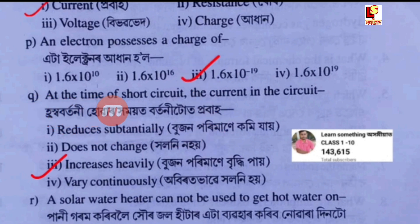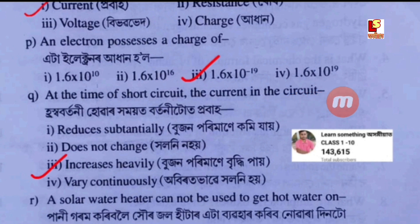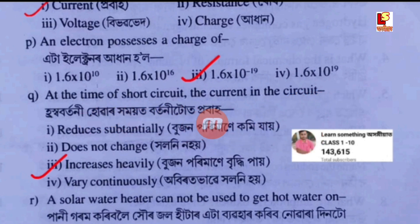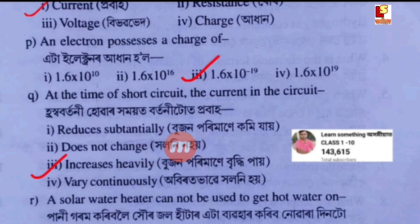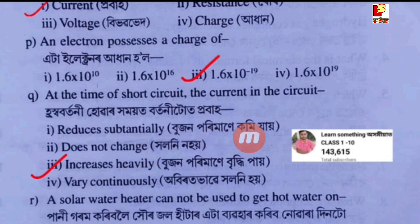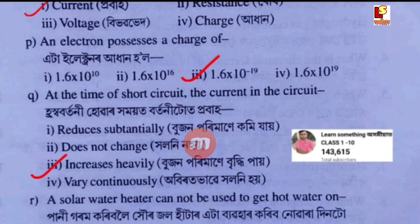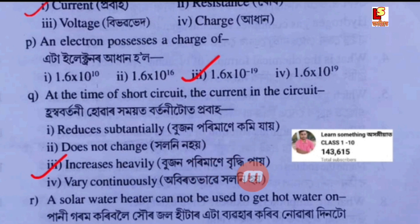Next question: at the time of short circuit, the current in the circuit — Option A: reduces substantially. Option B: does not change. Option C: increases heavily. Option D: varies continuously.